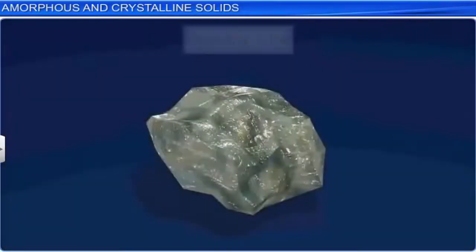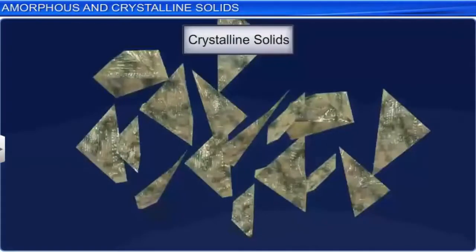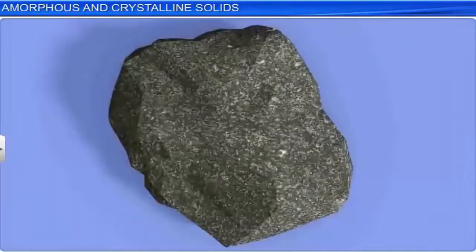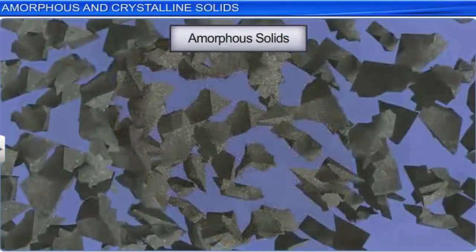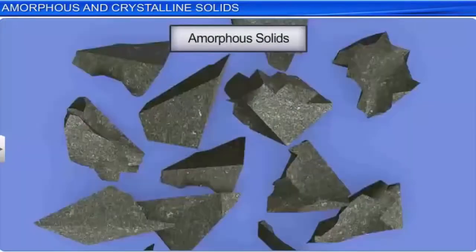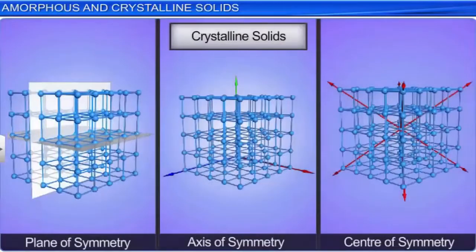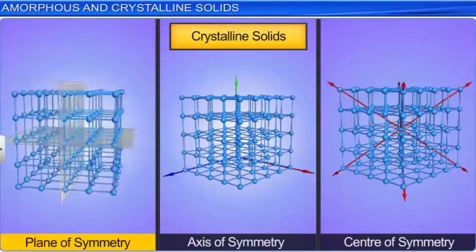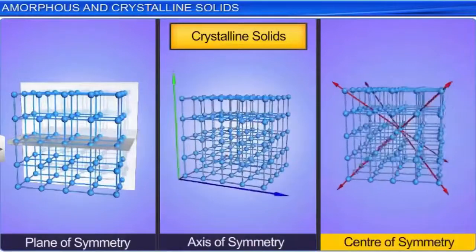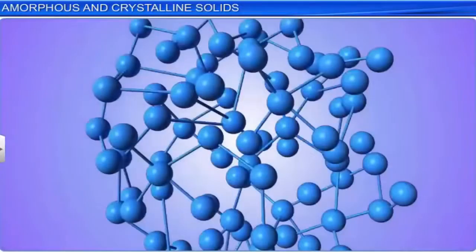If a crystalline solid is broken into pieces, the small constituents will have the same smooth and plain surfaces. Crystalline solids have definite heat of fusion values, while amorphous solids do not. Another important property is symmetry: crystalline solids show plane of symmetry, axis of symmetry, and center of symmetry, while amorphous solids do not show any symmetry.